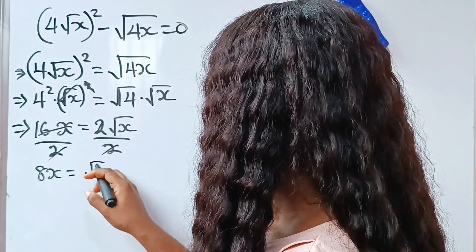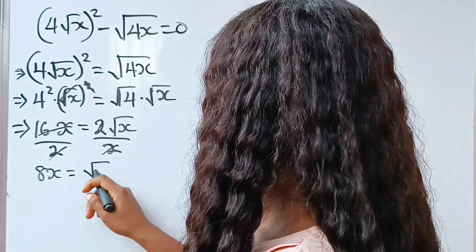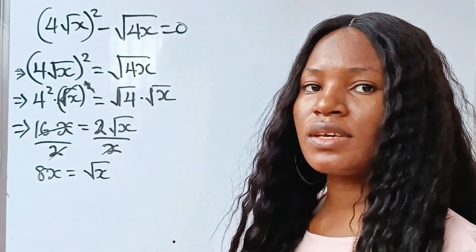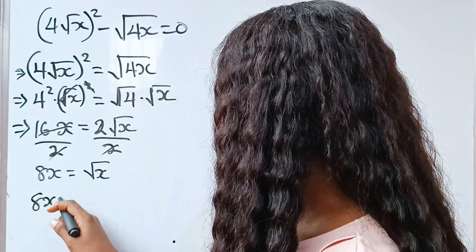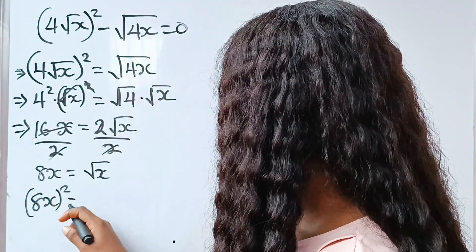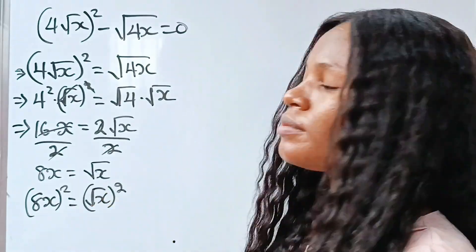Now, I want to remove this root sign, and to do that, I need to square both sides of this equation. So if I do 8x squared is equal to square root of x squared.